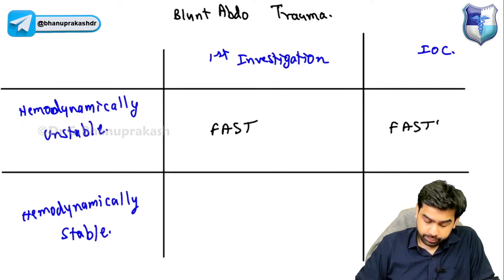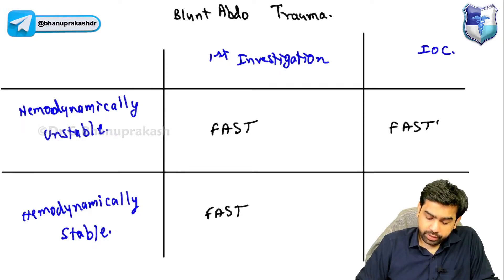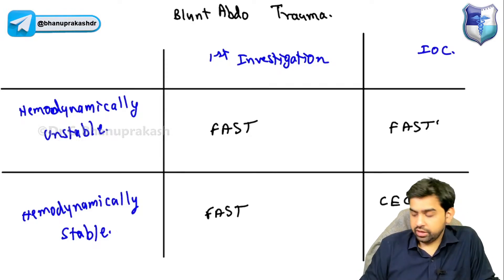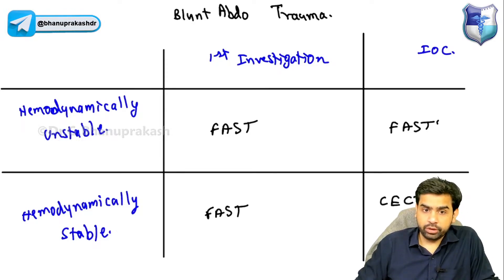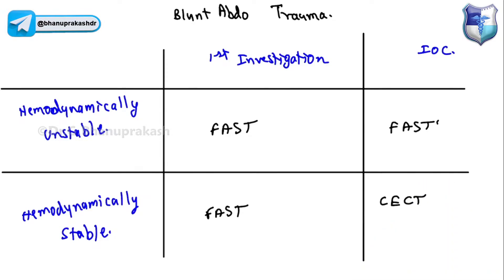For the hemodynamically stable patient, the first investigation is FAST, but the investigation of choice is the contrast-enhanced CT scan of the abdomen. Based on this framework, you should be able to answer the questions that can be asked on this topic.